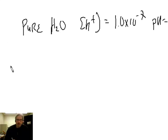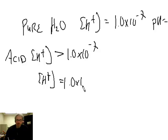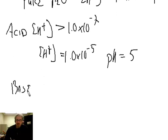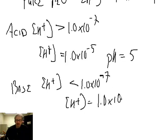In an acidic solution, [H⁺] is greater than 1.0 × 10⁻⁷. Let's pick a number that's bigger — say [H⁺] = 1.0 × 10⁻⁵, which is 100 times bigger. The pH = −log(1 × 10⁻⁵) = 5. For a basic solution, [H⁺] is less than 1.0 × 10⁻⁷. For example, if [H⁺] = 1.0 × 10⁻⁹ — 100 times smaller than in water — the pH would be 9.